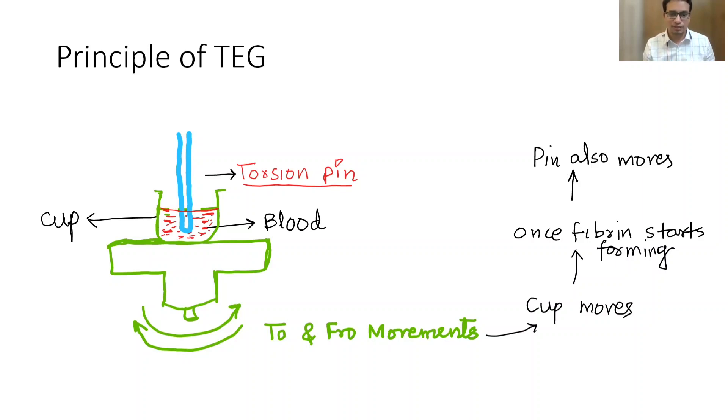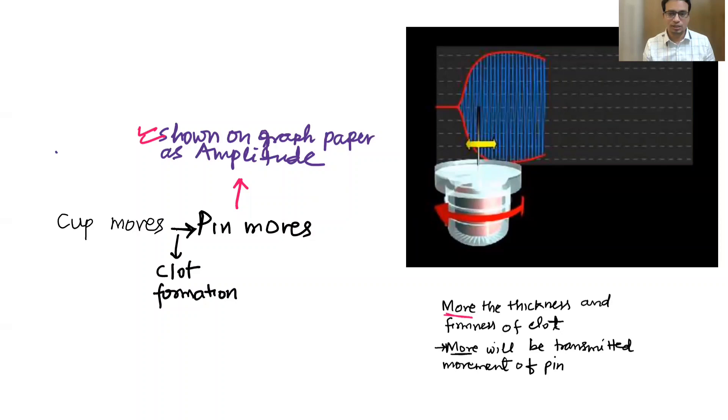As the blood clots, the rotational movement of the cup is transmitted to the pin. A transducer is attached to the pin which converts the torsion on the pin into the thromboelastograph. That is the whole principle of TEG. Once the clot is formed, about two millimeter is the thickness of clot which is usually registered as some amplitude on the thromboelastograph.